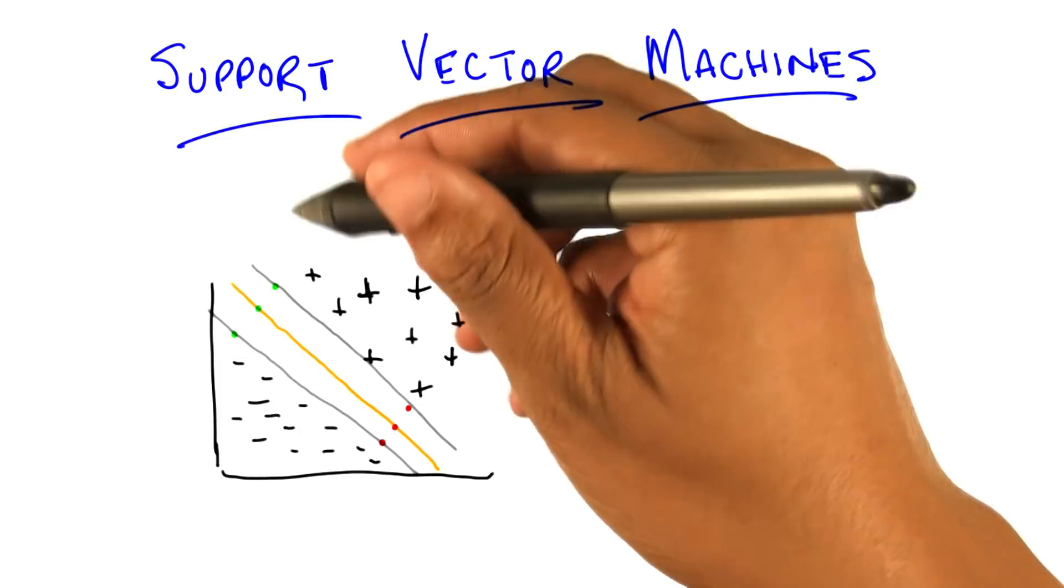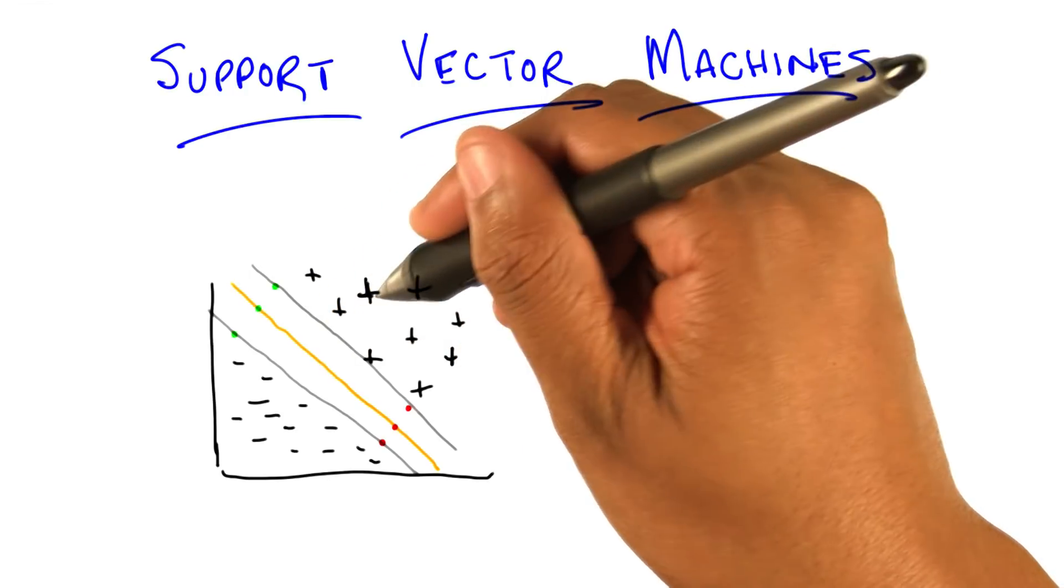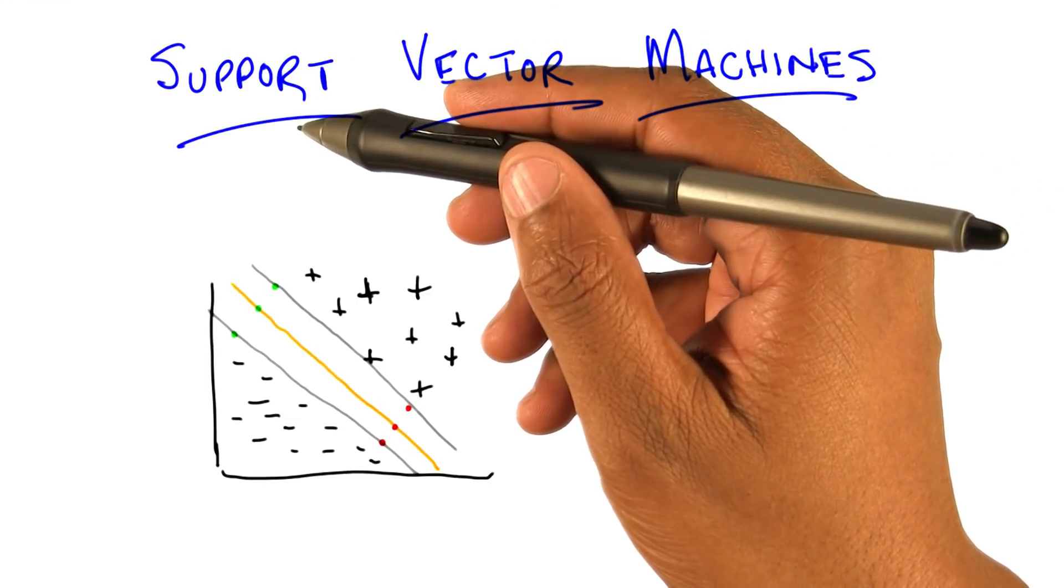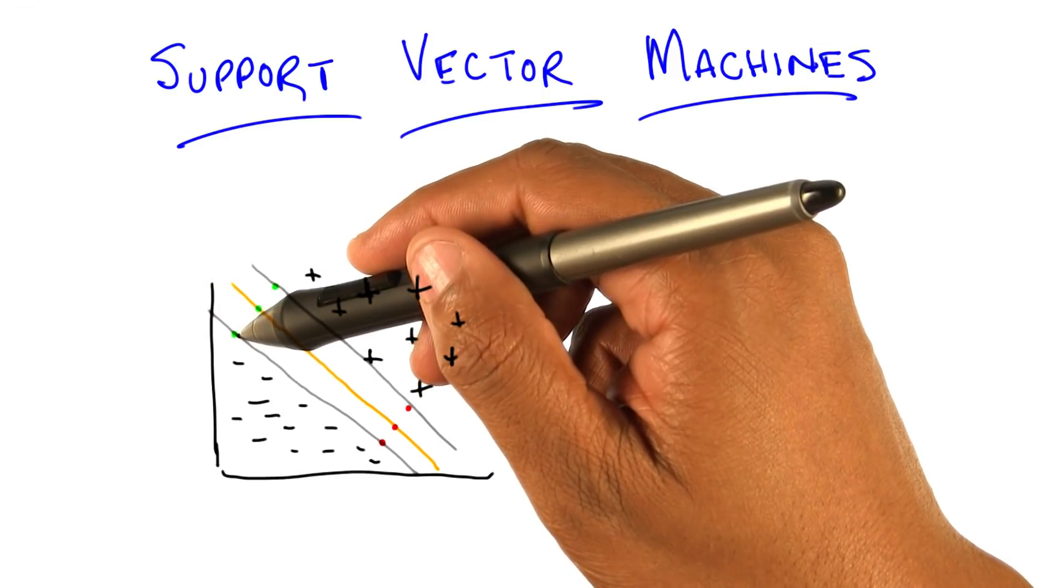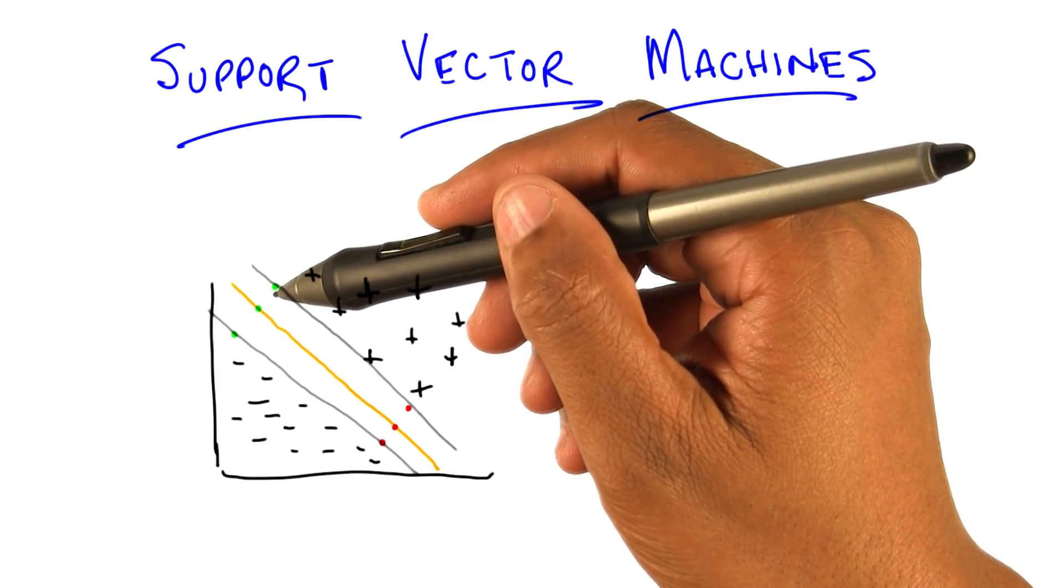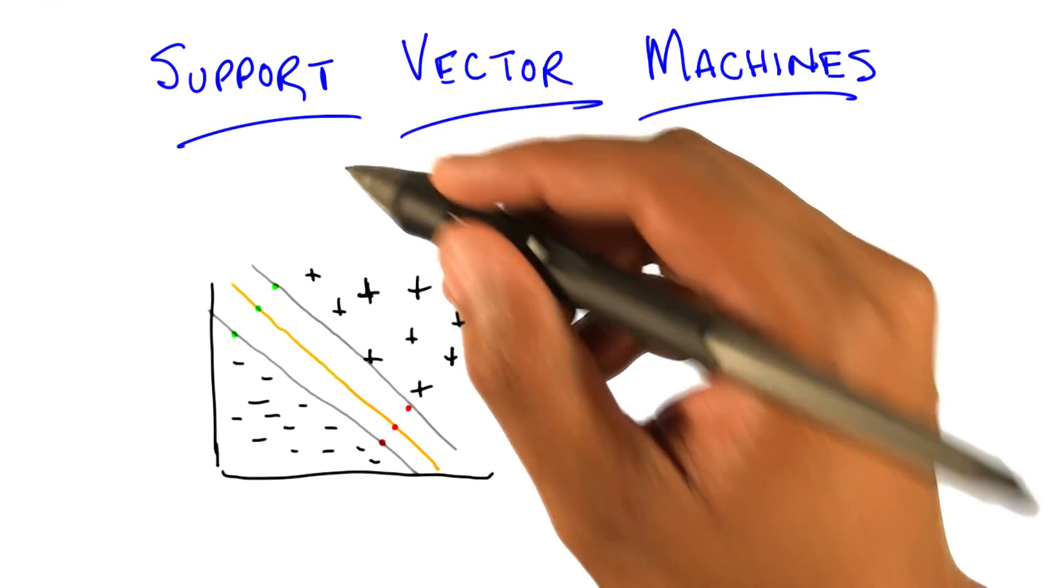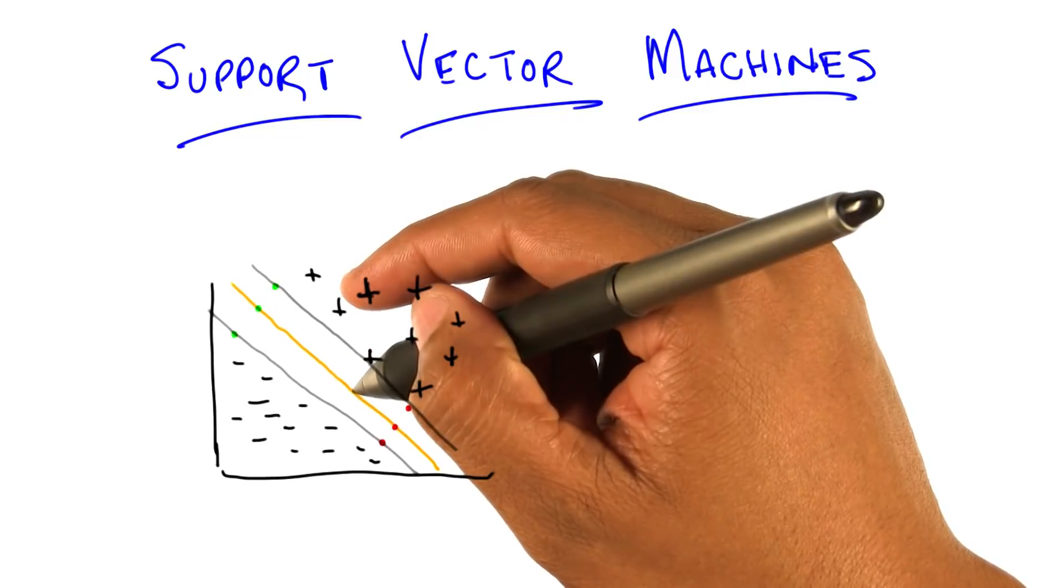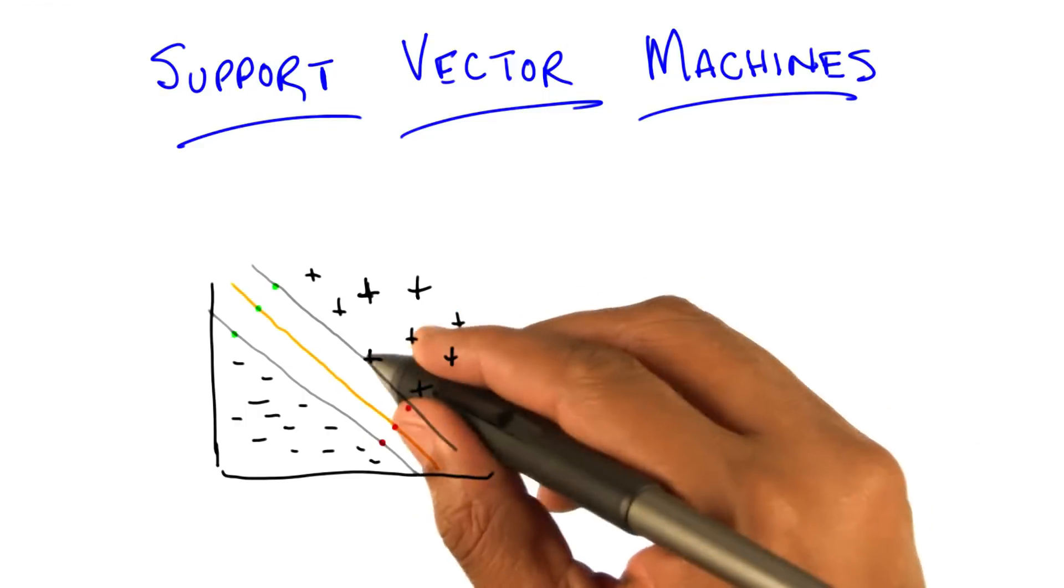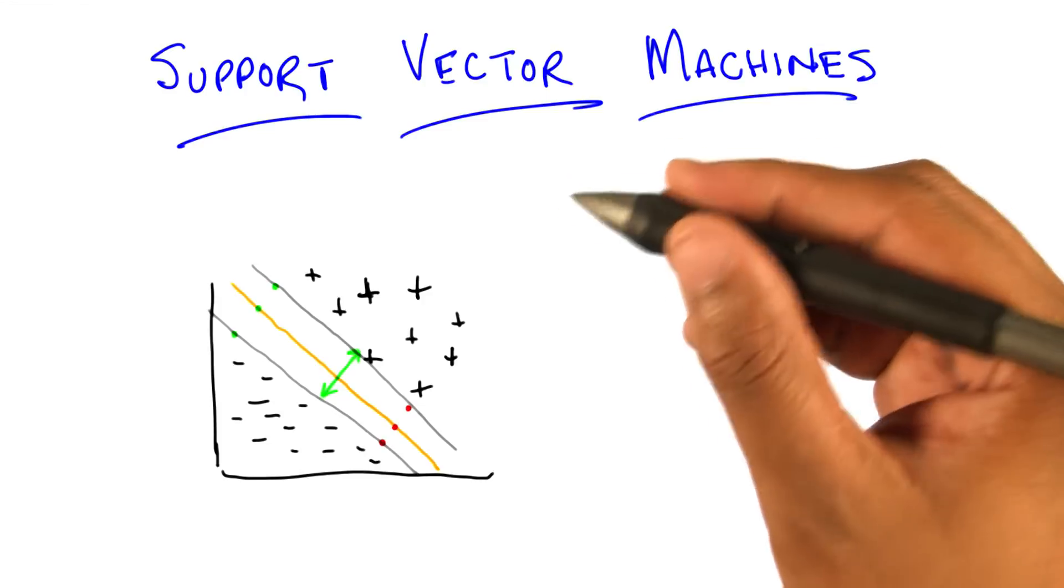If we think of this top gray line here as the line that gets as close to the plus points as possible without crossing over and misclassifying them, and the bottom gray line as the one that gets as close as possible to the minus signs without misclassifying them, then the middle line is in the happy medium. What you really want is that the distance here is as big as possible.